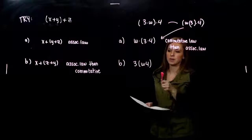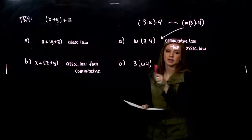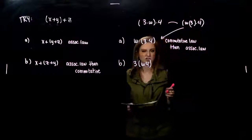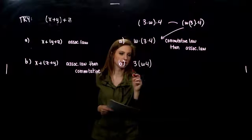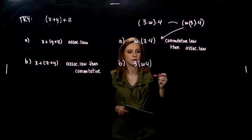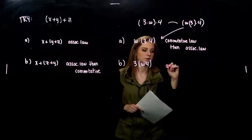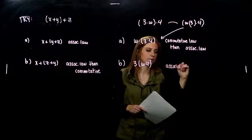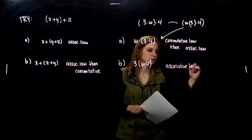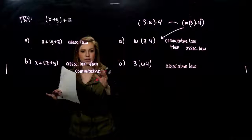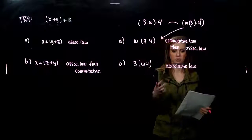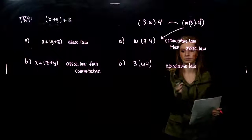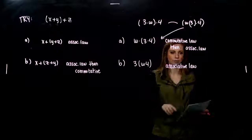And, for part B, we still have the same operation. Everything's being multiplied. But, what's changed? The order stayed the same. So, we didn't commute anything. But, we did associate different variables together. So, in that case, we just used the associative law. So, know the difference. Association, grouping. Who do I want to associate together? Commuting. If I change the order, how does that affect my expression? They're all equivalent.